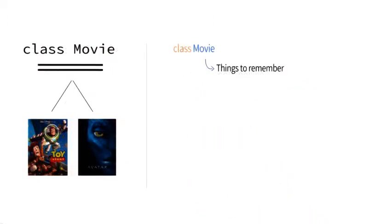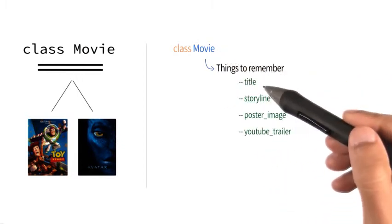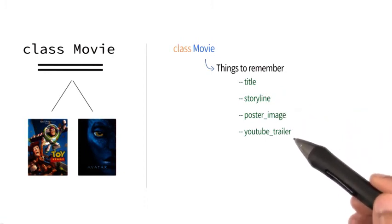So in summation, when designing the class movie, we probably want to remember data like the movie's title, its storyline, its poster image, and the link to its YouTube trailer.